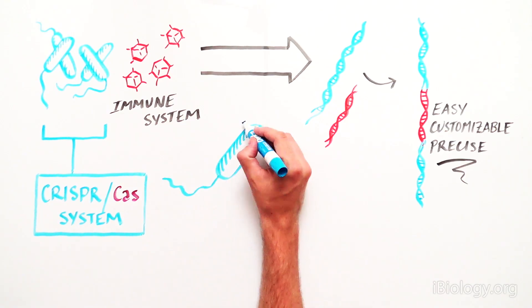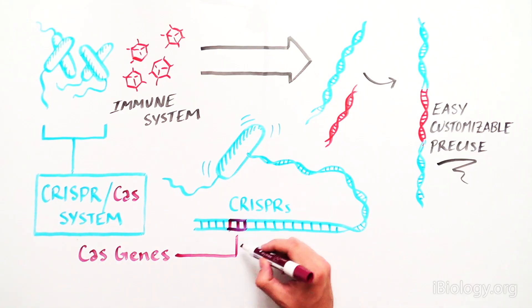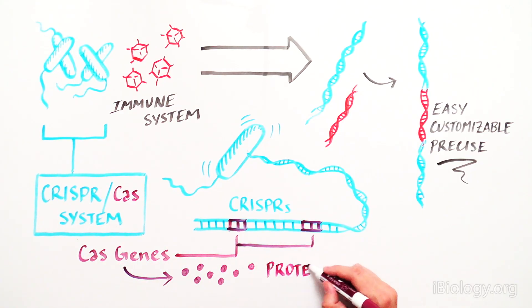CRISPRs are stretches of DNA sequence found in the bacterial genome. In close proximity to CRISPR are the Cas genes, which encode proteins necessary for the CRISPR system.